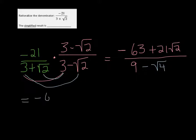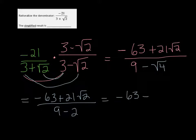Now of course, the square root of 4 is just 2, so we want to change that to 9 minus 2. So we get negative 63 plus 21 root 2 over 7.